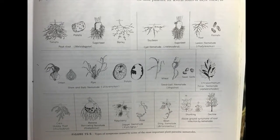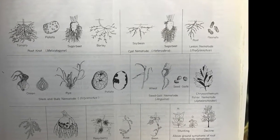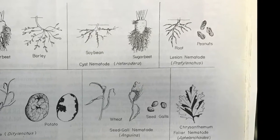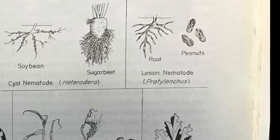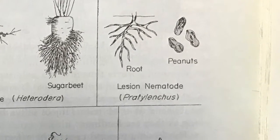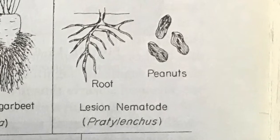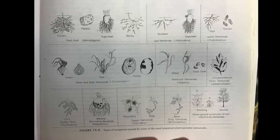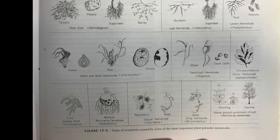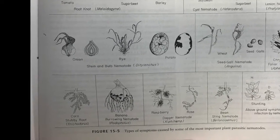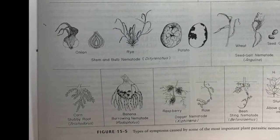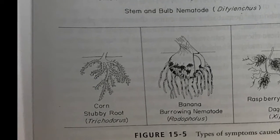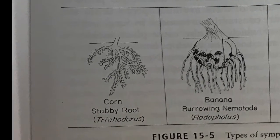Lesion nematodes reduce and inhibit root development by forming local lesions on young roots, causing stunted roots and chlorotic spots. Another important nematode is the stubby root nematode, which devitalizes root tips and stops their growth, causing reduction of root systems, severe stunting, chlorosis, and reduced crop yield.